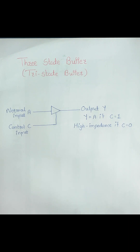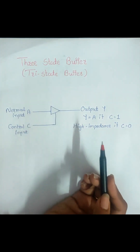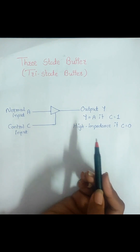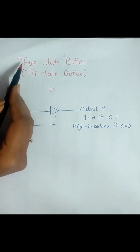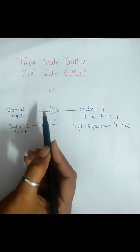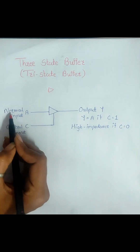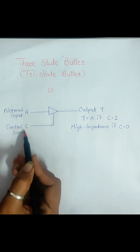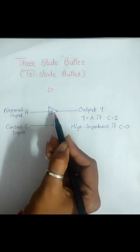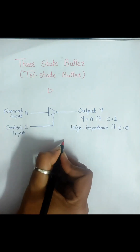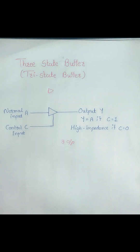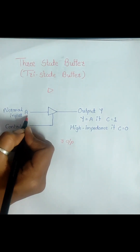A three-state buffer works like a conventional logic gate, but the only difference is it has three outputs. This triangle symbol is used to represent a three-state buffer. It has two inputs: a normal input A and a control input C, and the output is Y. In Y, we get three possible outputs — one based on the normal input and the other being a high impedance state.